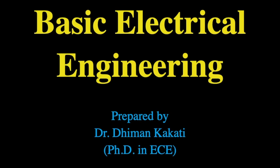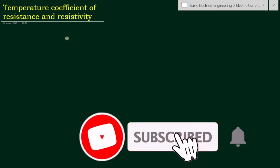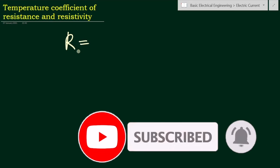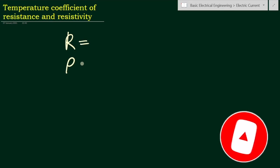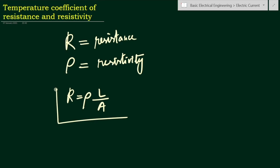Hello everyone, this is Dr. Dhiman and in this video we will see about the temperature coefficient of resistance as well as resistivity. The resistance is usually denoted by R and the resistivity is denoted by rho. We have already seen in our last lecture that R is equal to rho L divided by A. This is the relation between resistance, the length of the conductor and the area of cross section. Here rho is the constant of proportionality and it is often called as the specific resistance or resistivity.